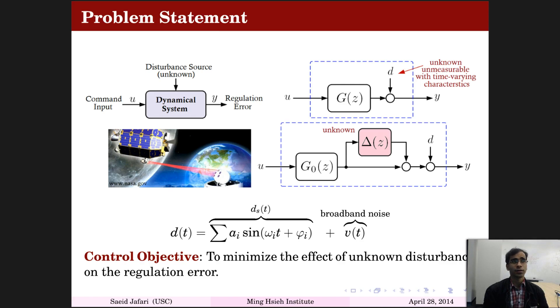But these disturbances destroy the tracking performance. We have to produce a control signal u to counteract the effect of these unknown vibrational disturbances. Without loss of generality, we consider additive output disturbance. To design a robust controller in practice, we have to consider the effect of modeling error, so we consider an unknown unmodeled dynamic term delta(z).